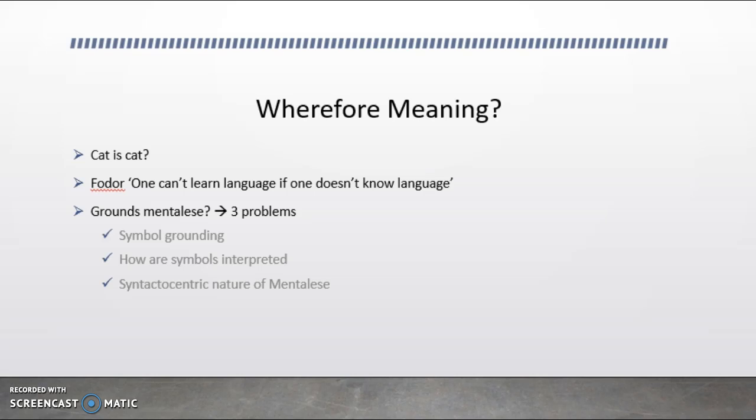First of all, we have the problem of symbol grounding. If mentalese consists of symbols that relate to states of affairs, like for example a cat, how do they get their meaning? In mentalese, they are related to the things they represent. There is no relationship between the symbol and the thing it represents. In the real world, the mentalese symbol on its own is insufficient to tell you what a cat is.